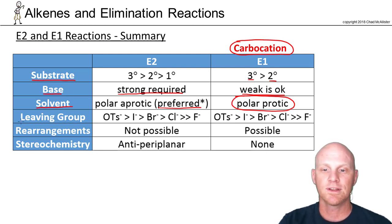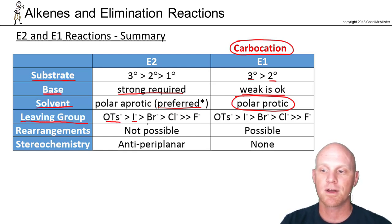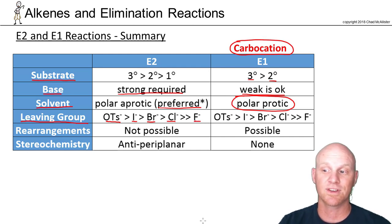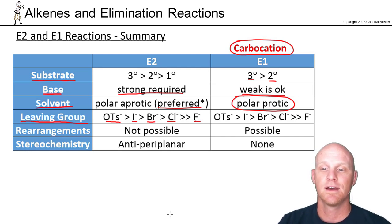The leaving group trend is the same for both reactions. OTs is better than I, better than Br, better than Cl, and then much better than fluoride — which is actually a bad leaving group, as we saw for one of the exceptions in Zaitsev's rule for E2 reactions.